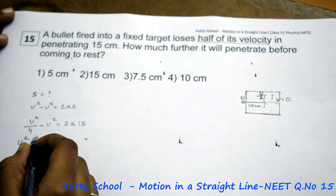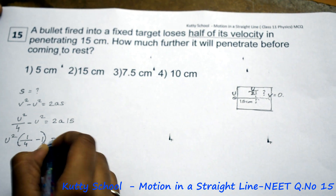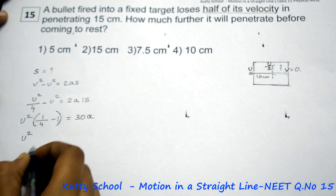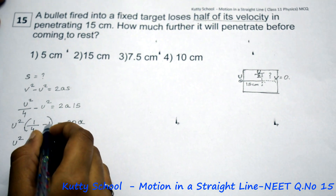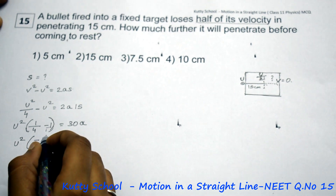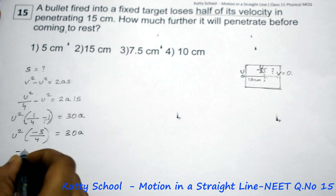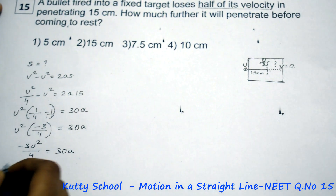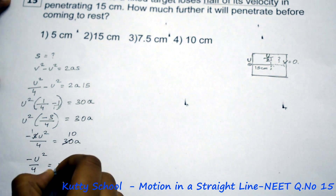So, u squared times (1 by 4 minus 1) is equal to 30a. Therefore, minus 3u squared by 4 is equal to 30a. Simplifying, minus u squared by 4 is equal to 10a. This is Equation 1.